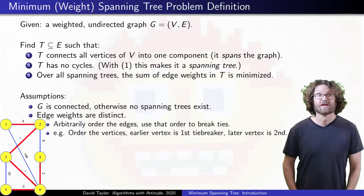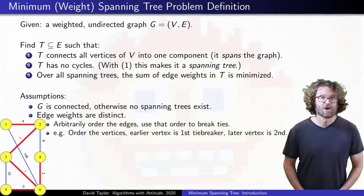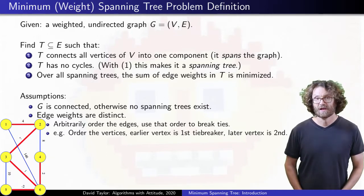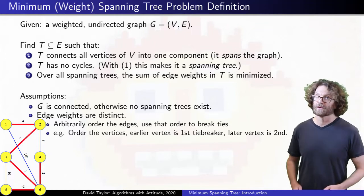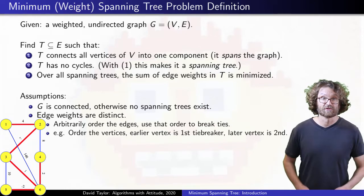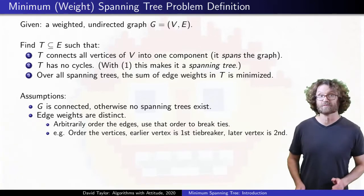Distinct edge weights let us simplify our language. We can talk about discarding an edge because it is not in the minimum spanning tree. That's simpler than discarding an edge because without it there still exists a minimum spanning tree that also matches whatever other choices you have made up to this point.